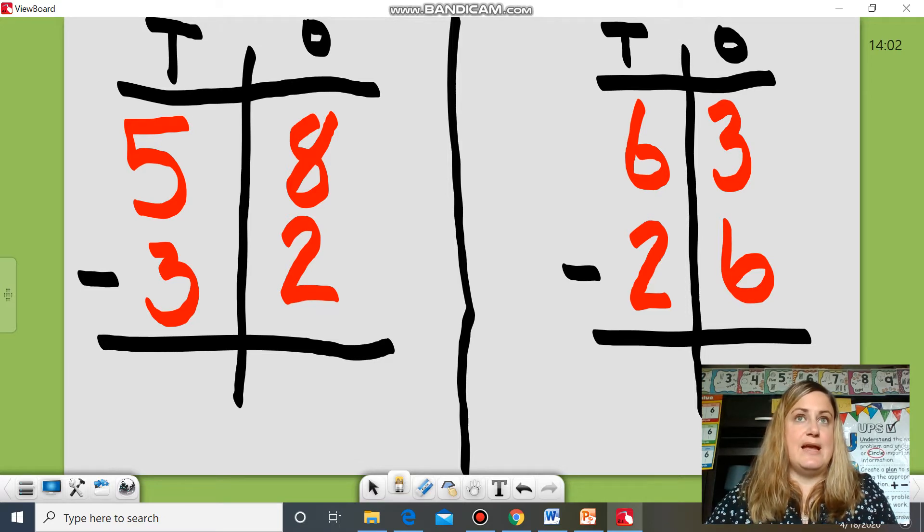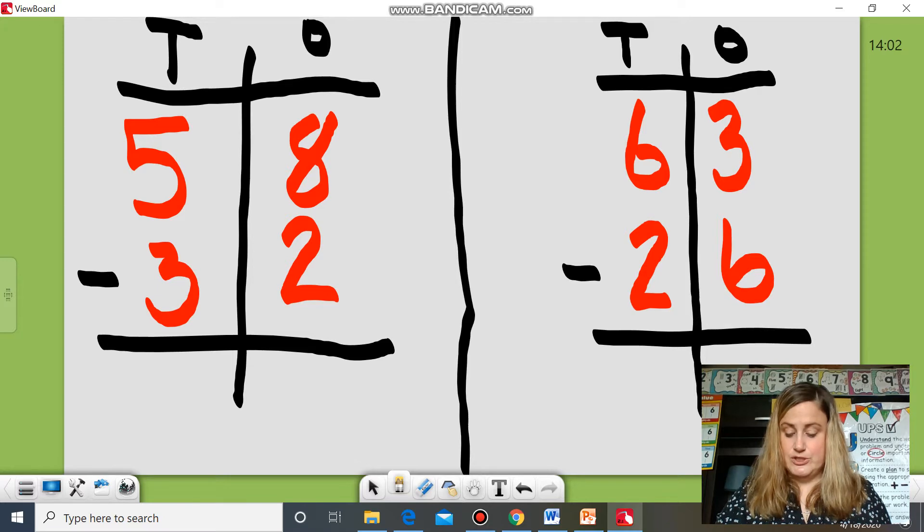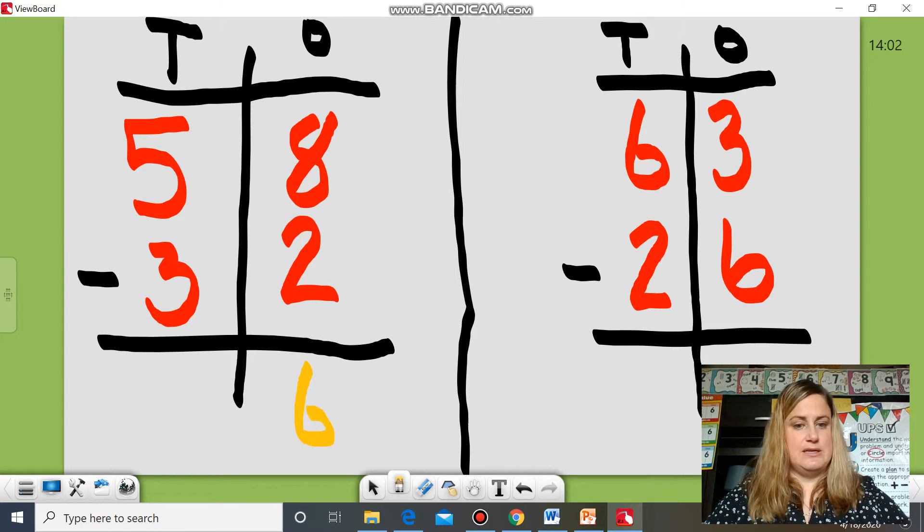So if I have eight in my head counting back two, seven, six. If I have a number line or something to use at home I can count start on eight and jump back to one, two and I land on six. So my answer is six in the ones and I go to my tens and I subtract five minus three.